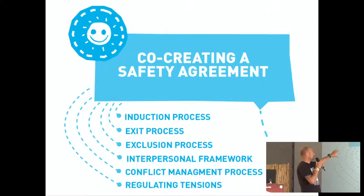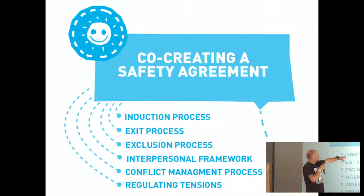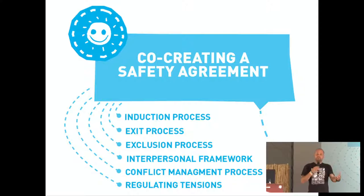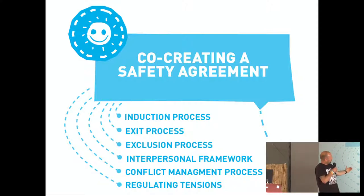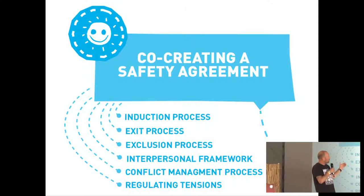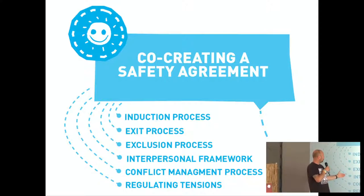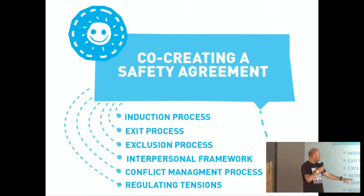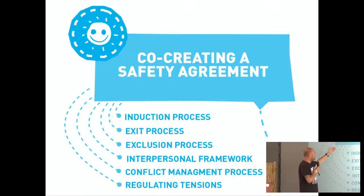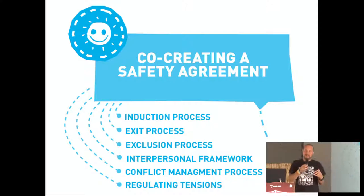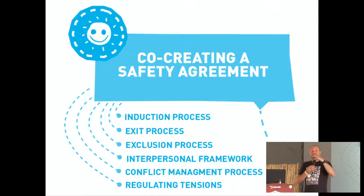A big part of that is what we call having a safety agreement, set up at the beginning of the group process when the group forms. Within it you would have induction processes — how does someone new come in and be welcomed into the group — and exit processes for how people leave. You'd also define on what basis someone could be excluded from the group, what acceptable behavior looks like, and how you deal with conflict and regulate tensions arising in the group. Having this in place from the beginning means everyone understands the process and what's acceptable — it's not unwritten rules, it's all clear and plain for everyone to see.